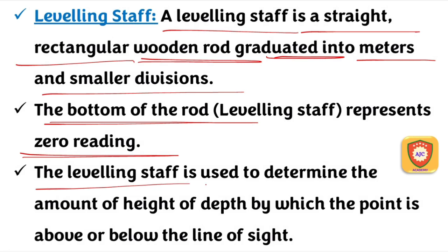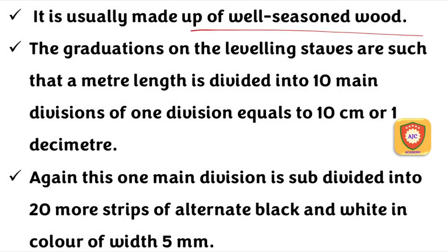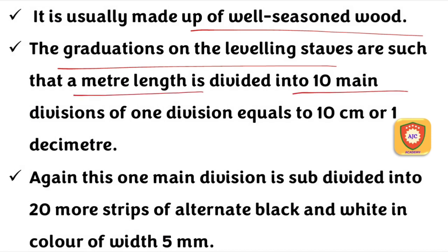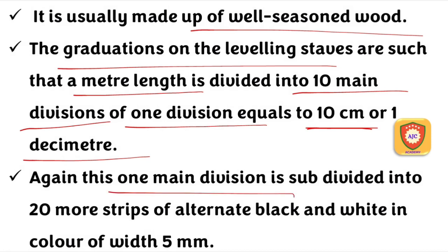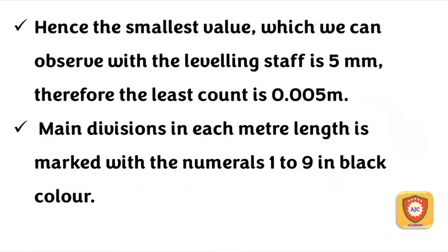The leveling staff can be used to find elevation. It is made of well-seasoned wood and is divided into 10 main divisions. One main division equals 10 cm or 1 dm. Each main division is further divided into 20 strips, colored black and white, each strip being 5 mm.